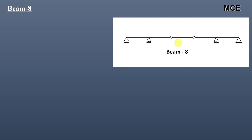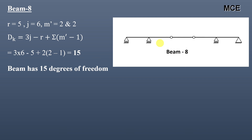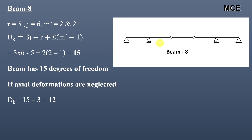For beam eight, there are five reactions and six joints: one, two, three, four, five, and six. There are two internal hinges, and the number of members meeting at both internal hinges is two each, so m′ = 2 and 2. The value of dk = 15, meaning the beam has 15 degrees of freedom. This beam has three members, so if axial deformations are neglected, dk = 15 − 3 = 12.